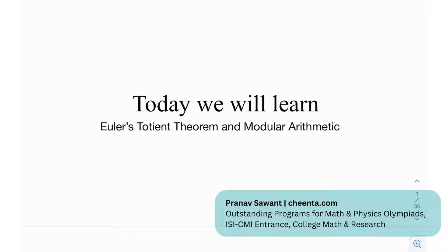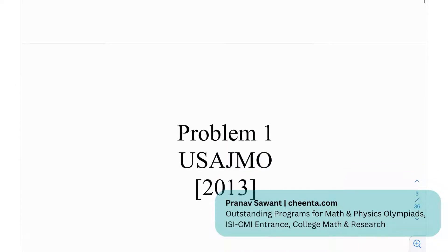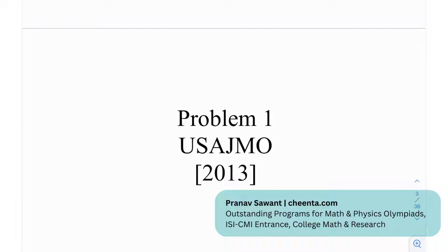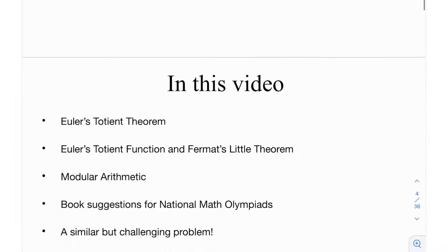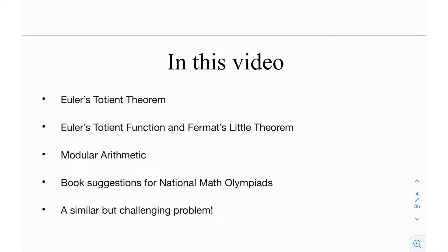Hi everyone. Today we have a really interesting question where we'll be talking about the Euler's totient theorem and modular arithmetic — probably two of the most fundamental concepts in number theory, yet they give rise to a lot of really nice problems. This is problem number one from the USAJMO in the year 2013. We'll cover the Euler's totient theorem, the Euler's totient function, Fermat's little theorem, modular arithmetic, book suggestions for national math olympiads, and a similar challenging problem at the end.